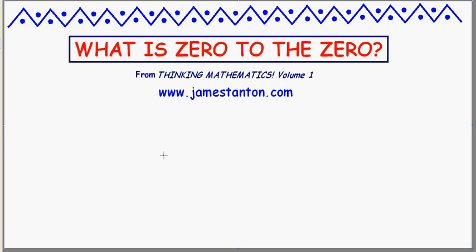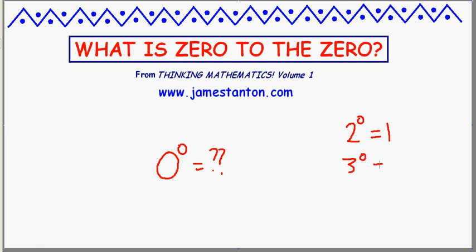Welcome. Let us explore the question: what is zero raised to the zeroth power? We've seen in a previous lesson on tricky exponents that two to the zeroth power should be one. There's nothing special about the number two there — we could have worked with three, seventeen, or pi, and each to the zeroth power is one. So given the work of that lesson, it seems appropriate to say that zero to the zeroth power is one.